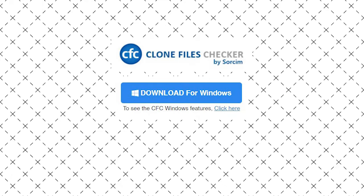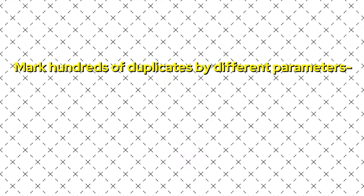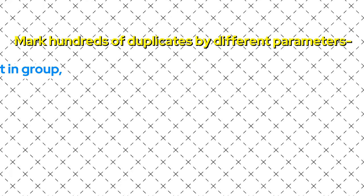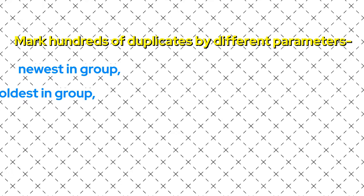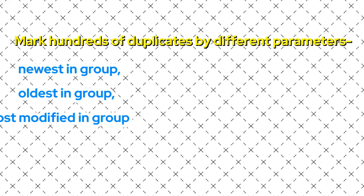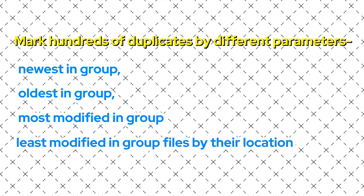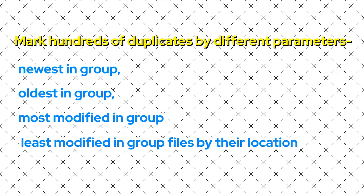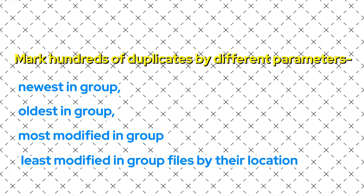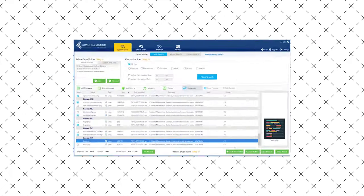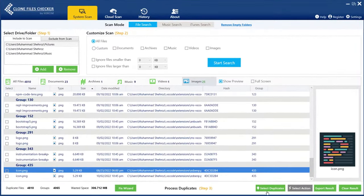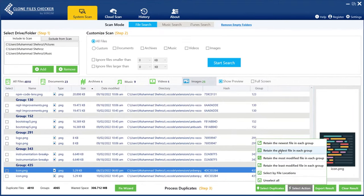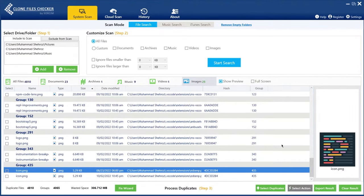Duplicates Selection Assistant: CFC provides tons of file selection criteria so that you don't have to click and click and click. You can mark hundreds of duplicates by different parameters, such as newest in-group, oldest in-group, most modified in-group, least modified in-group, files by their location — for example, files located in a specific folder, etc. To select duplicate files, click on the Select Duplicates button and choose one of the selection criteria from the button menu.